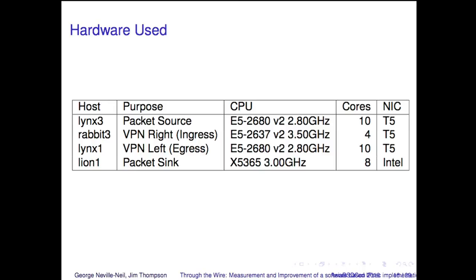Hardware used — this is something you'll always see in well-written systems papers: what hardware were you using? I probably should have also included the OS version, which for me is basically HEAD at a date since I'm always testing on HEAD. These machines are all using T5 Chelsio cards, and clearly Rabbit 3, the ingress VPN, is going to be the bottleneck because of its smaller number of cores.